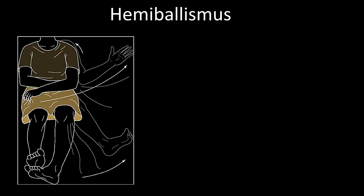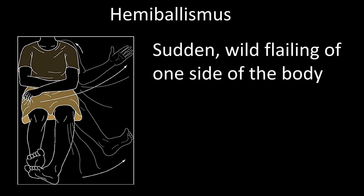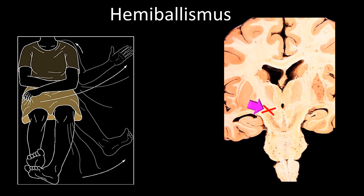Hemiballism is characterized by sudden wild flailing movements involving one side of the body. It is due to unilateral damage of the contralateral subthalamic nucleus.